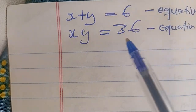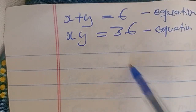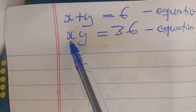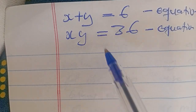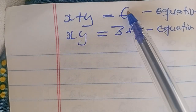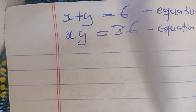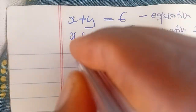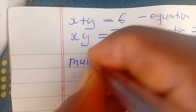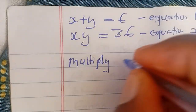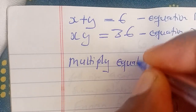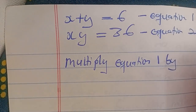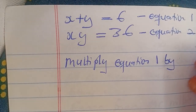But here I'm going to use a different approach. Since we have xy equal to 36, we can multiply equation 1 by x so that we can get xy there and substitute in the value for xy. So we are going to multiply equation 1 by x.